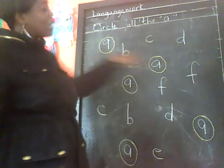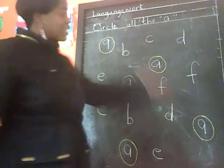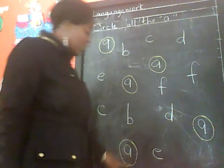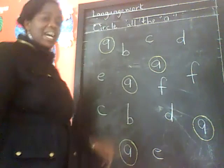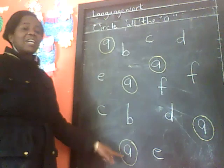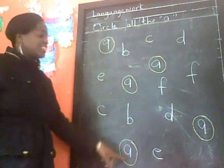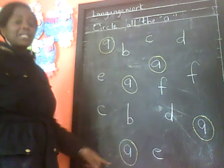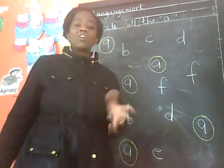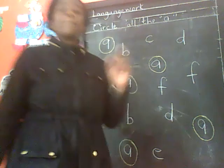If you look at the blackboard, the ones that we have circled are all sound R. So when you get your worksheet, this is what you are supposed to do. Make sure you circle with a pencil. Okay, children? Thank you.